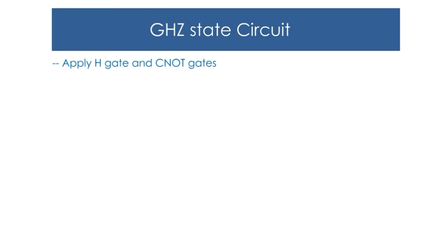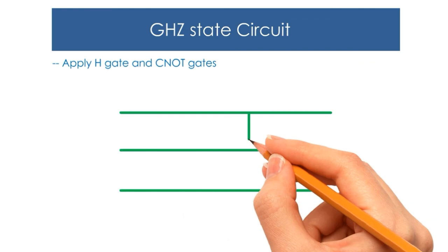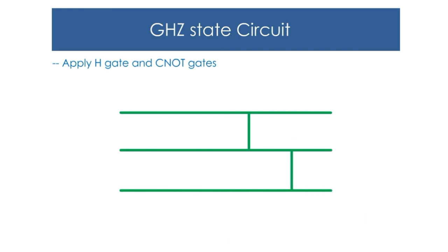Lastly, let us see the GHZ state circuit, where the GHZ circuit is used to generate three or more maximally entangled quantum states. It uses Hadamard and CNOT gates. The following circuit shows the GHZ state circuit. Here are the steps to apply for this circuit: first, input A, input B, input C. Then apply the H-gate on input A.